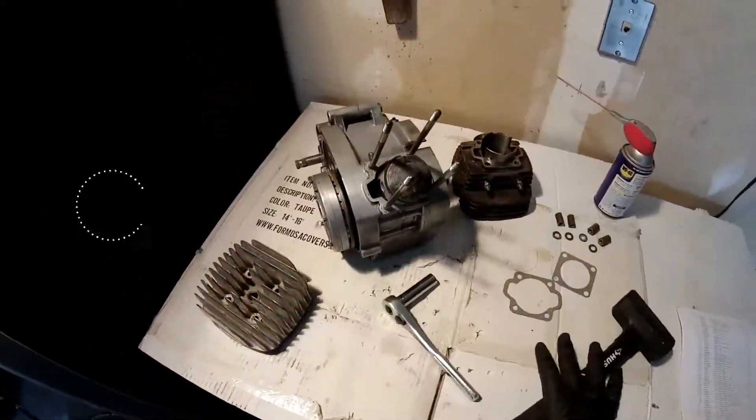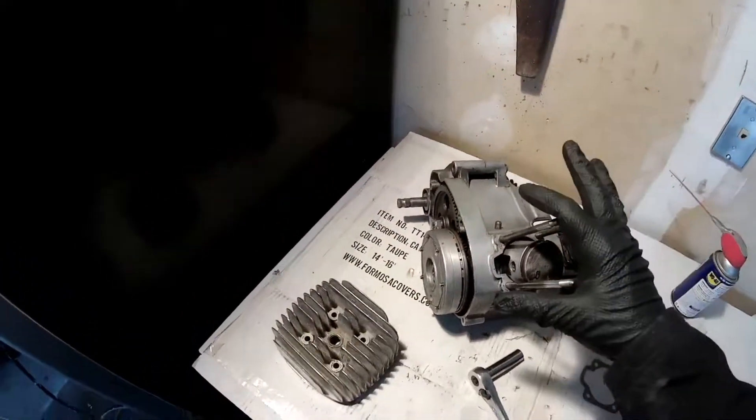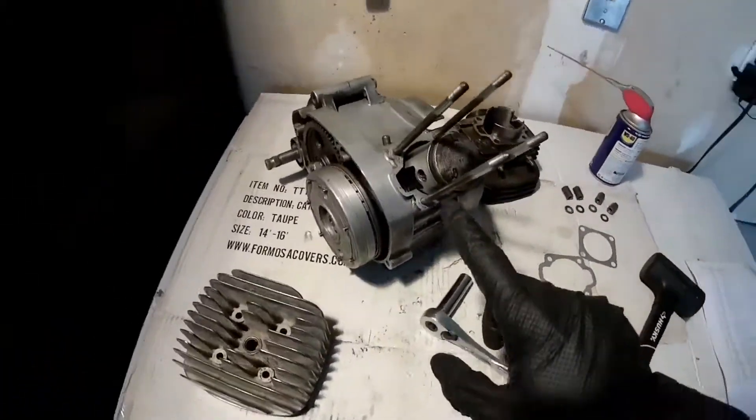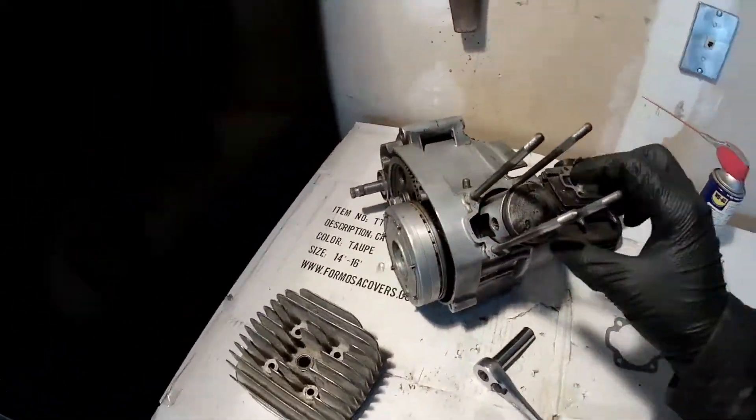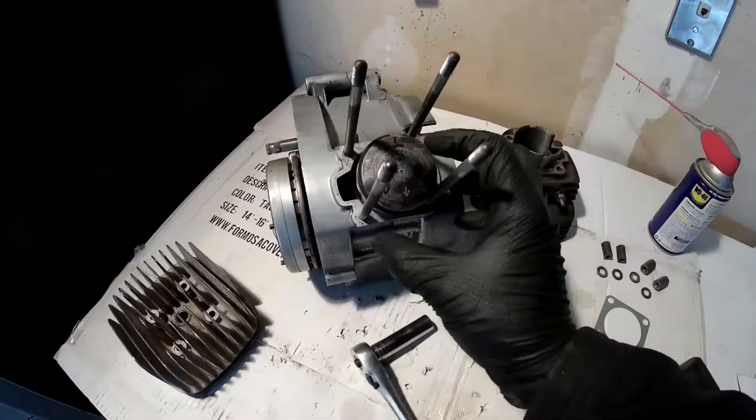Alright guys, so today I'm going to put the heads back on the motor. I've got the rings replaced on the piston. Now when you go to put these pistons in, I mark this B for bottom, T for top, and what I mean is you see these gaps in the ring.